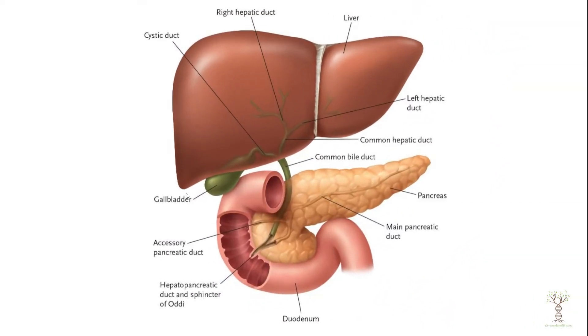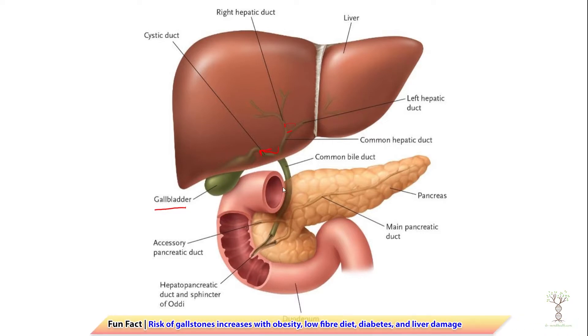In the last video we were looking at the liver and talking about how the liver makes bile, and the bile is stored in the gallbladder. The gallbladder is located here, and when the hepatic cells make bile it will move through the left and right hepatic duct, then into the gallbladder through the cystic duct, where the bile will be stored until it's required for digestion.